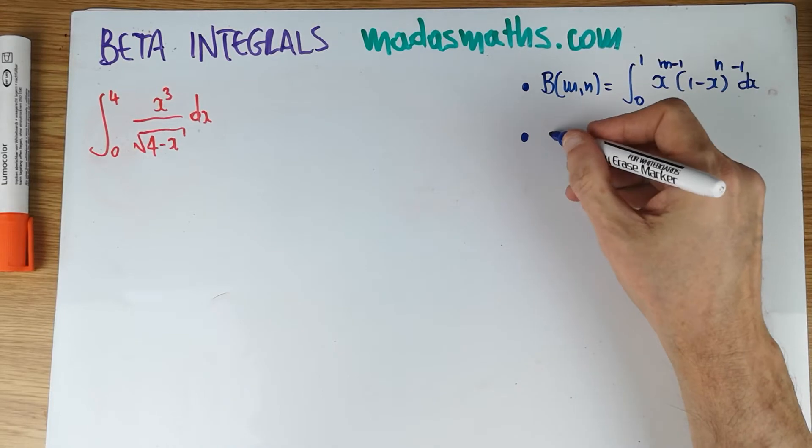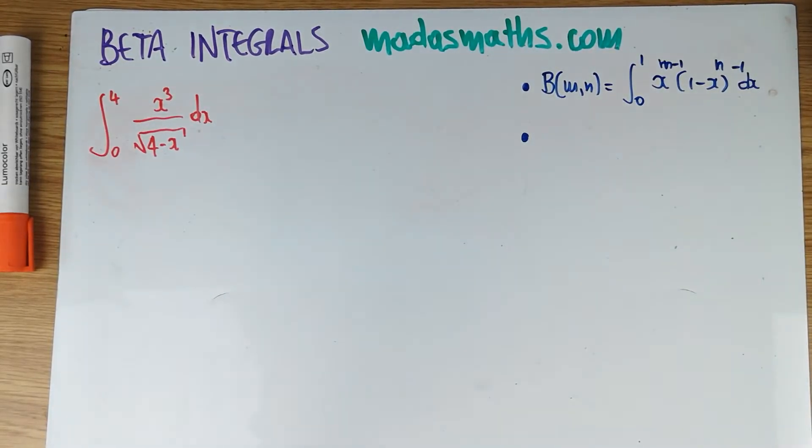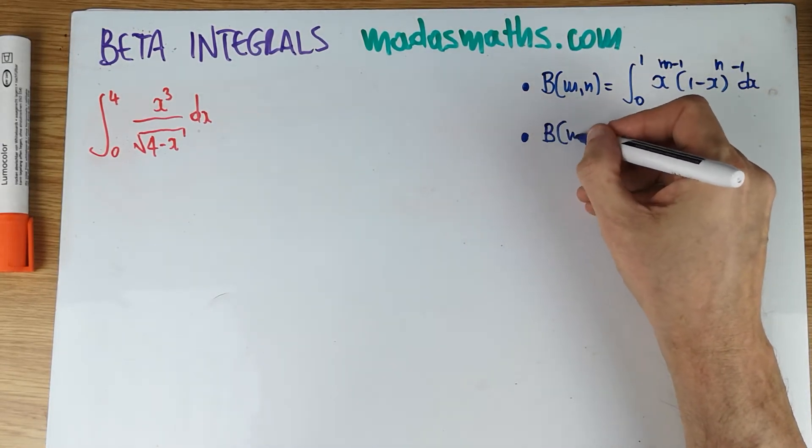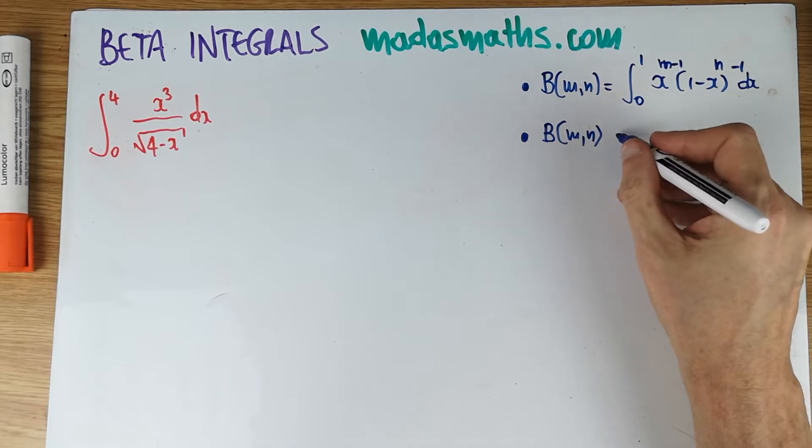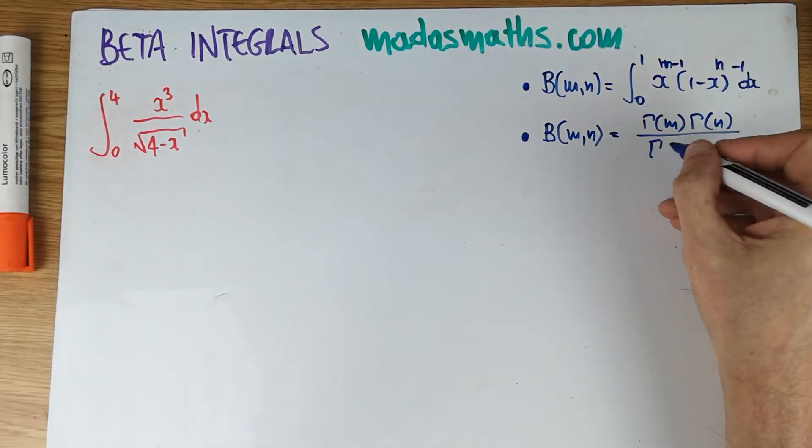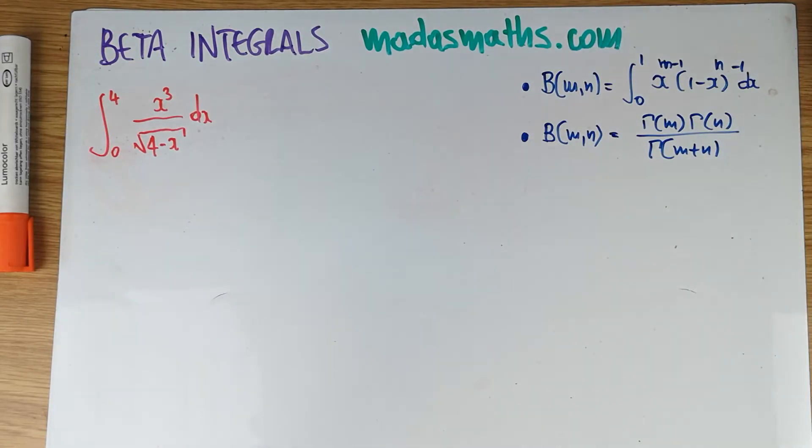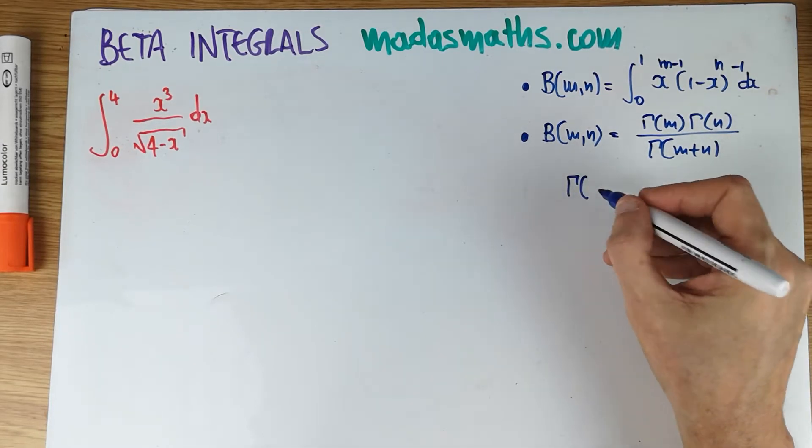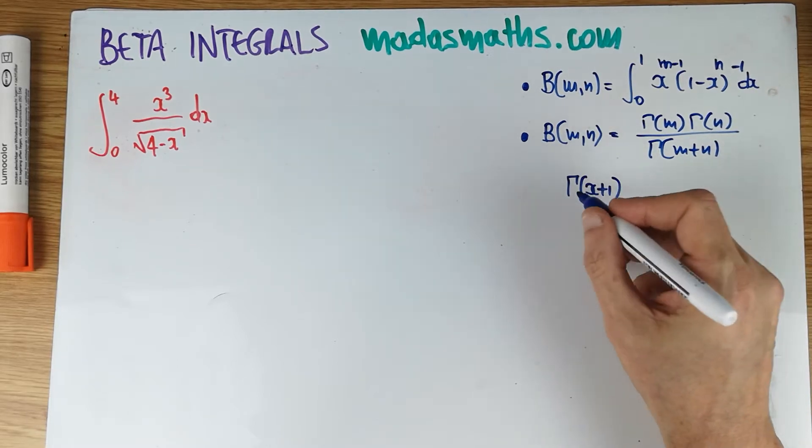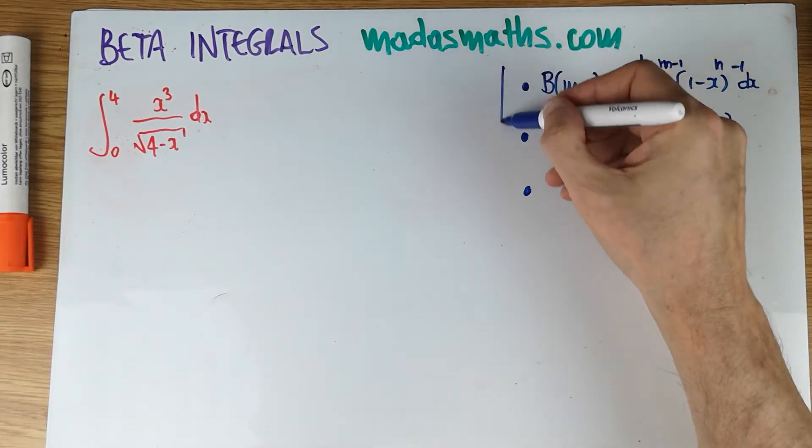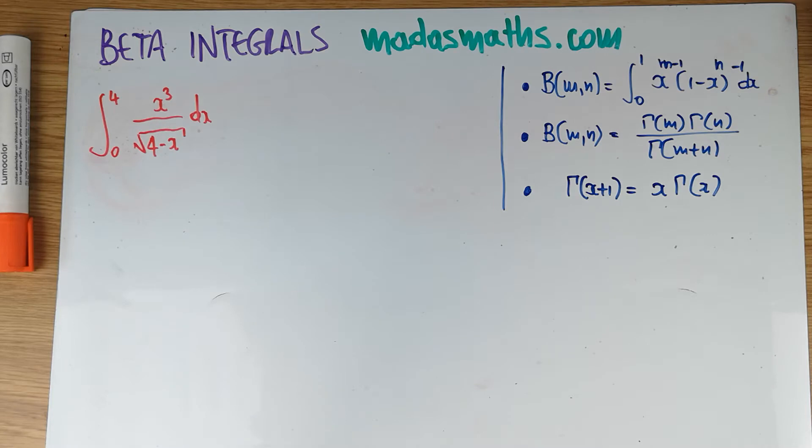And of course beta goes with gamma. So of course we need to have the relation between beta and gamma, which I don't think I actually proved. And I think it's quite lengthy to prove. So at some point I will actually prove this particular result. So this is actually that the beta of m, n is the gamma of m times the gamma of n divided by the gamma of m plus n. And often in evaluation when we go into gamma, we need to know that the gamma of x plus one is of course x gamma x. That's the third result.